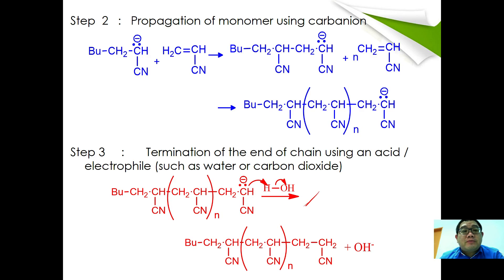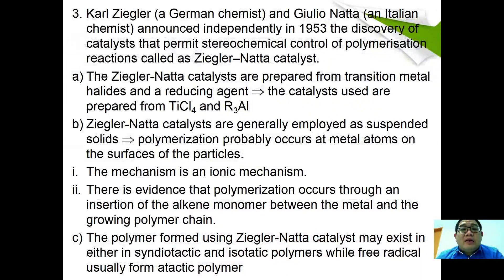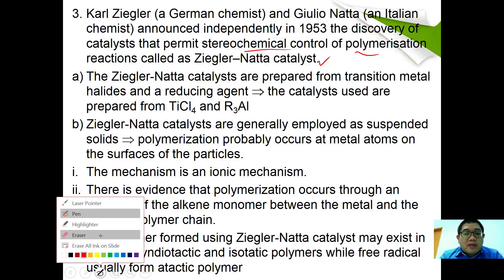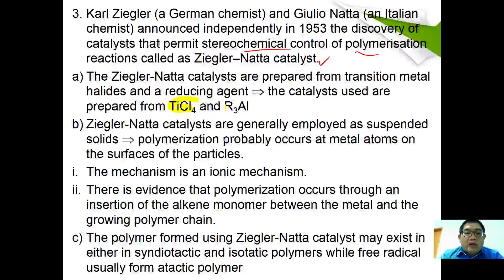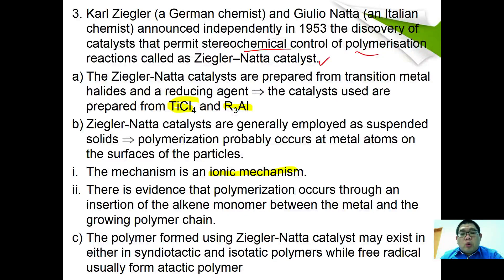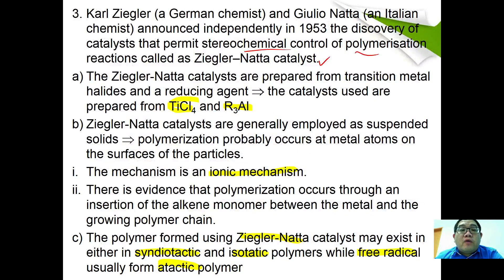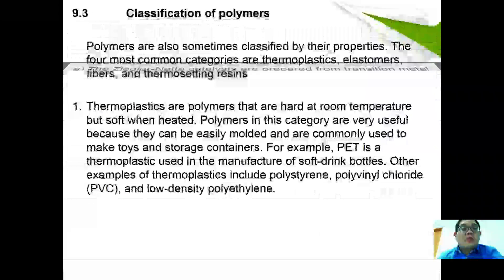Karl Ziegler and Giulio Natta announced independently in 1953 the discovery of catalysts that permit stereochemical control of polymerization, called Ziegler-Natta catalysts. The main ingredients are titanium tetrachloride and trialkyl aluminum. These catalysts are generally employed as suspended solids using an ionic mechanism, and polymerization occurs through insertion of alkene monomer between the metal and the growing polymer chain. Polymers formed using Ziegler-Natta catalysts may exist as syndiotactic or isotactic, while free radical polymerization produces atactic polymers.